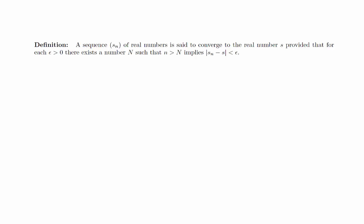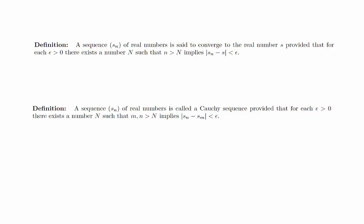In order to get around this difficulty, we are going to introduce another definition. A sequence s_n of real numbers is called a Cauchy sequence, provided that for each ε > 0, there exists a number N such that m, n > N implies |s_n - s_m| < ε.